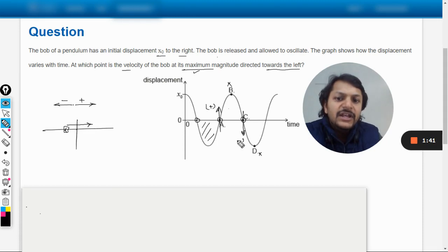Negative means now the body is moving from the right hand side to the left hand side, and hence the velocity is negative and maximum. That is why the answer will be c.